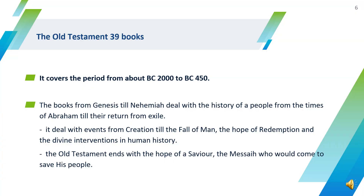The 39 books of the Old Testament cover the period from about BC 2000 to BC 450. Books from Genesis till Nehemiah deal with the history of a people from the times of Abraham till their return from exile. It deals with events from creation till the fall of man, the hope of redemption, and ends with the hope of a Saviour — the Messiah to come to save his people.